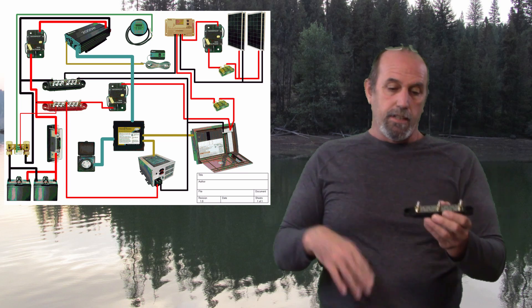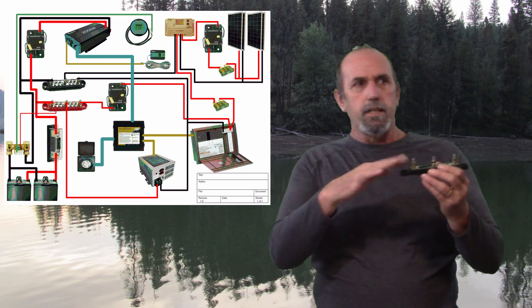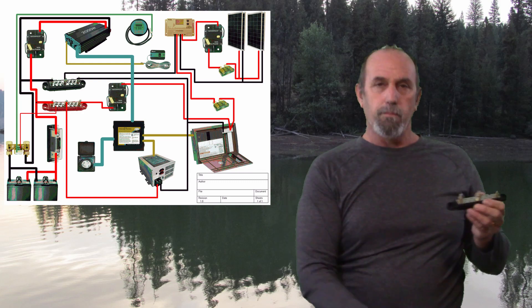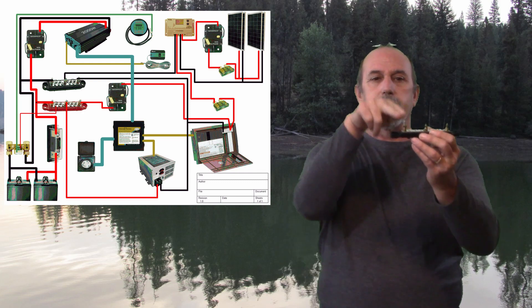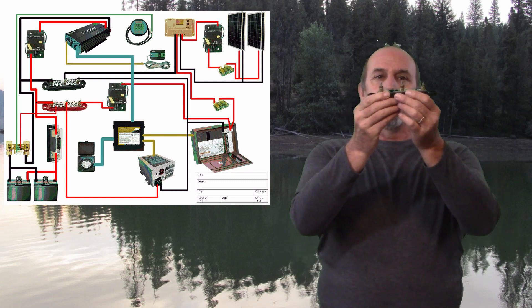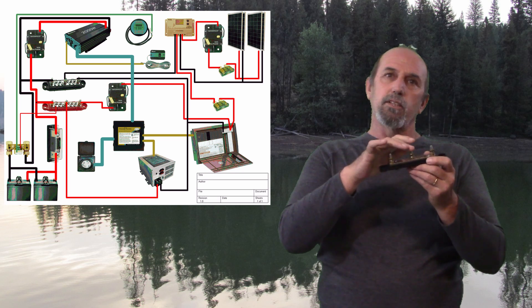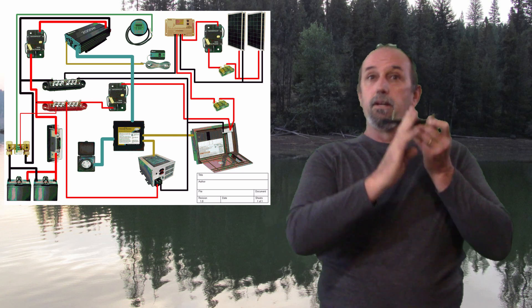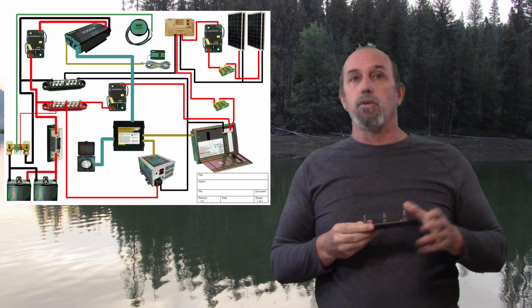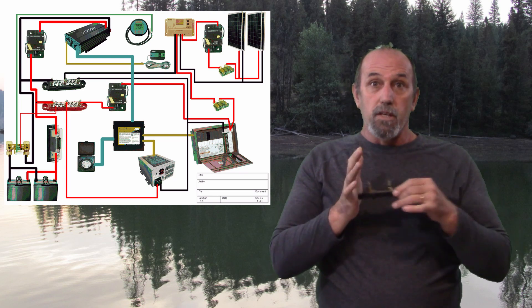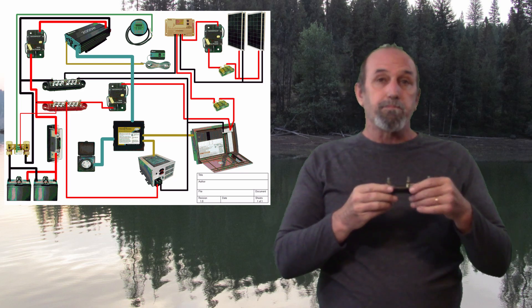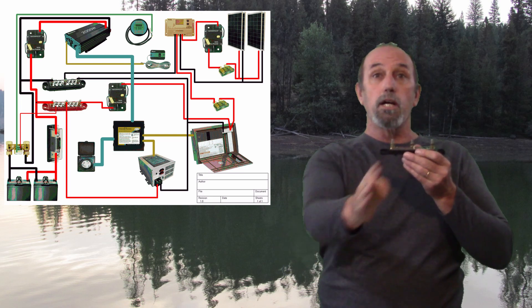and I'm going to have a 40 amp breaker tied to this. And then off of one of these lugs is going to be a 30 amp, and that will go back to the power distribution center for the trailer. So we'll have that wire protected.